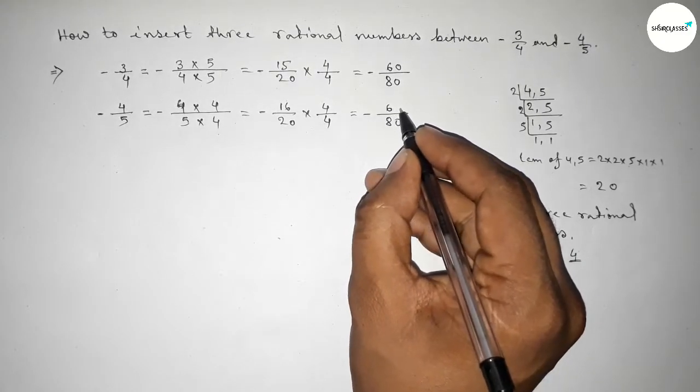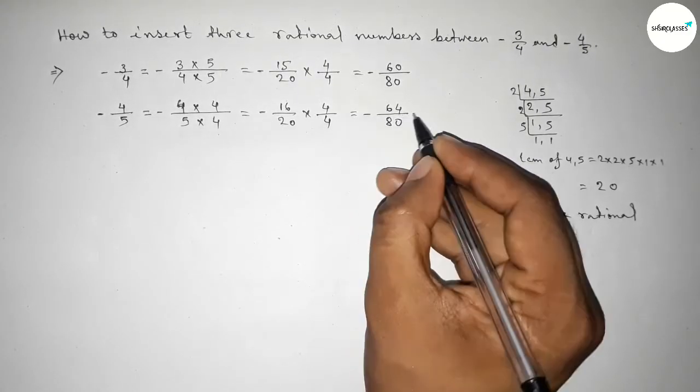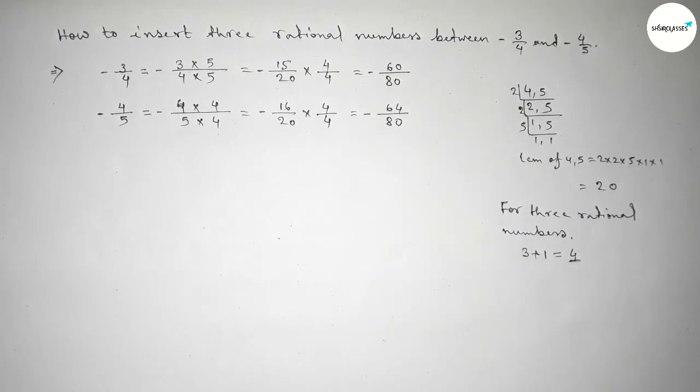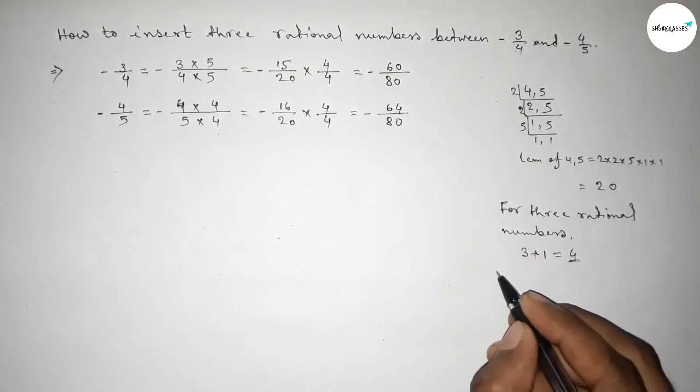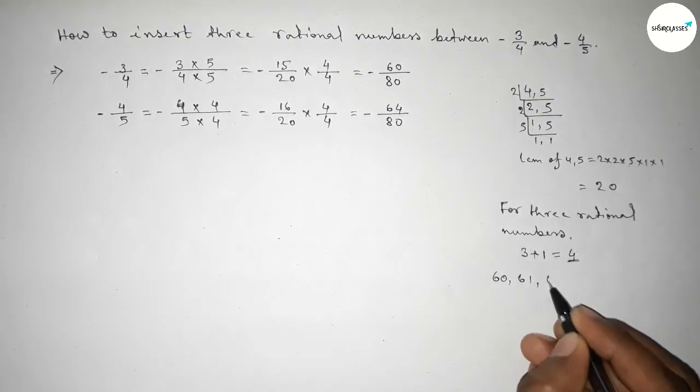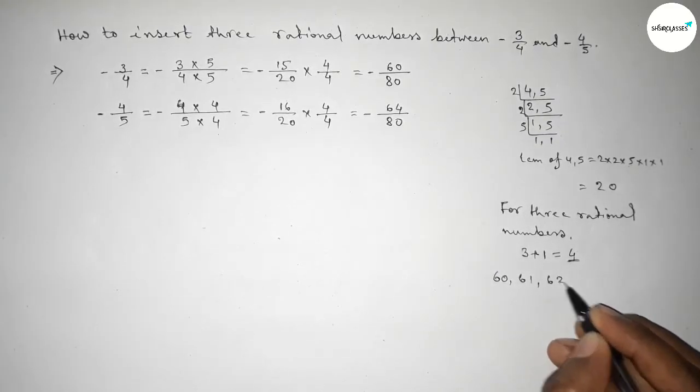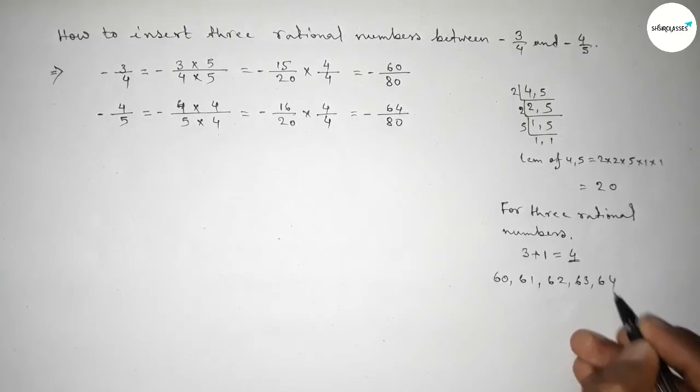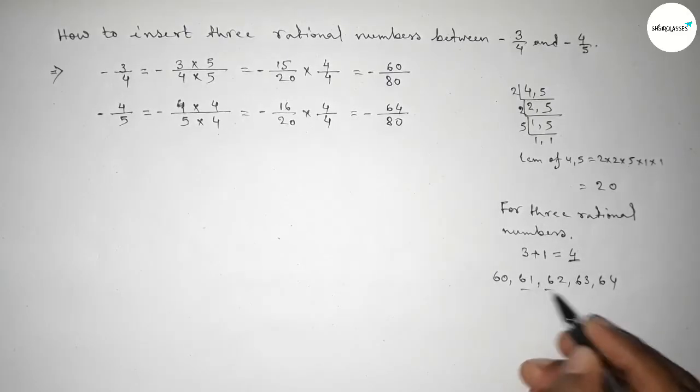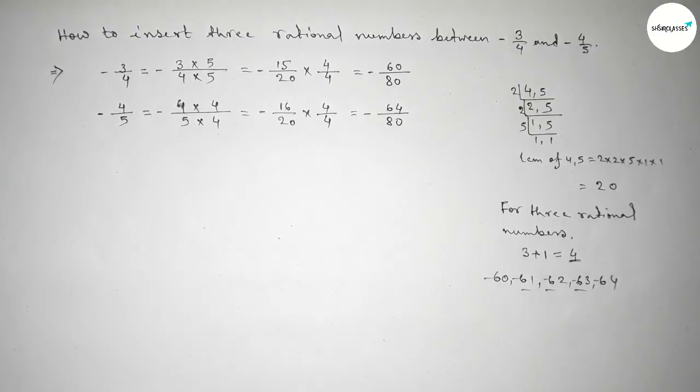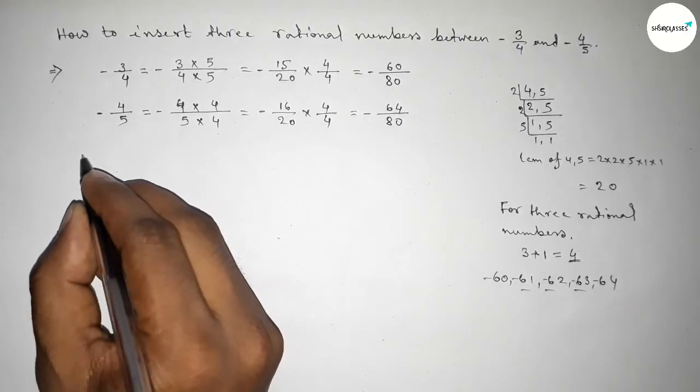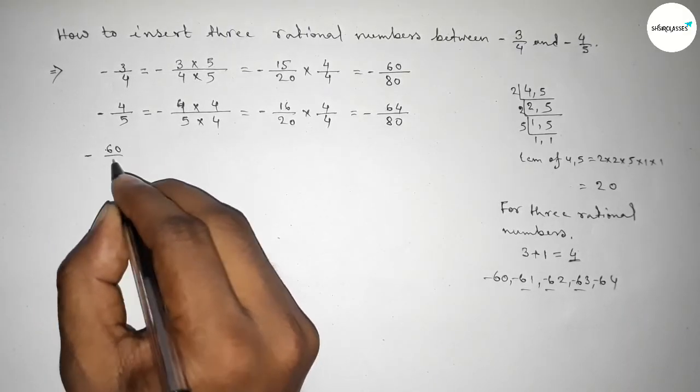Now between -60 and -64, we can get three negative natural numbers. So here, these are the three negative natural numbers. And by these natural numbers, we can form all the rational numbers.